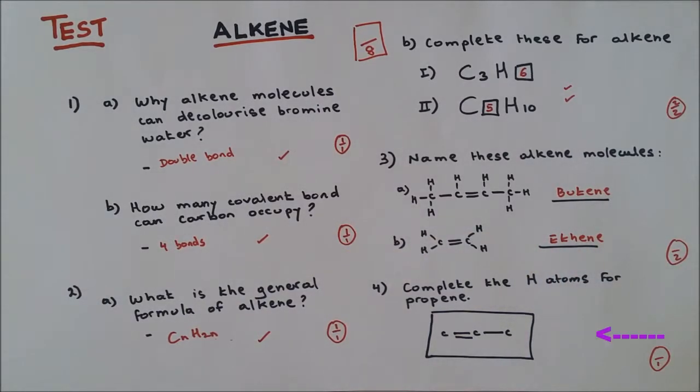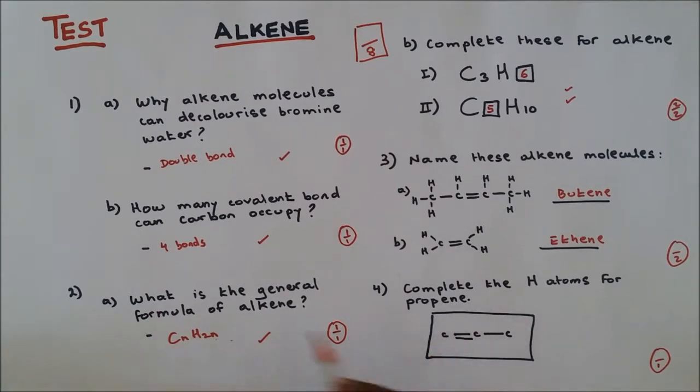Last question. Question four: Complete the hydrogen atoms for propene. I want you to put the number of hydrogen atoms where they belong. We see that this carbon has two bonds already and can only have a maximum of four bonds, so I could have two more.